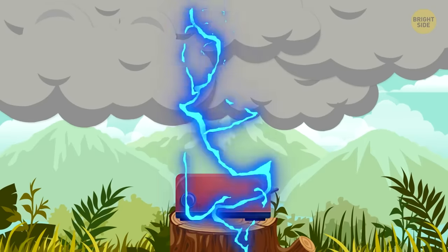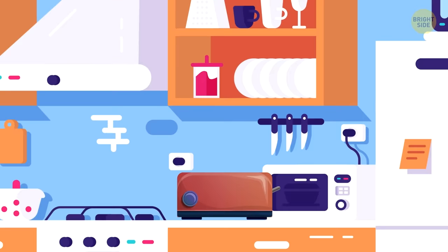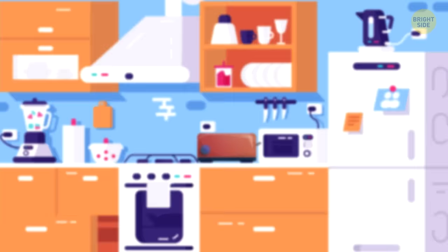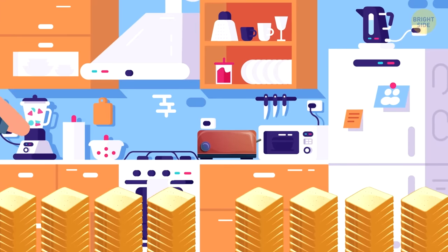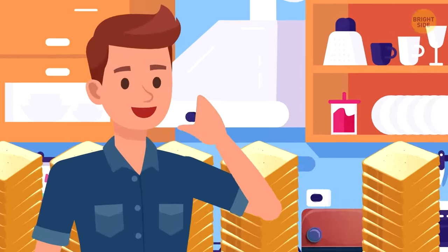Just one bolt of lightning will provide enough energy for a two-slice toaster to work for 84,000 minutes. It's also enough time to cook almost 100,000 slices of toast. Really?